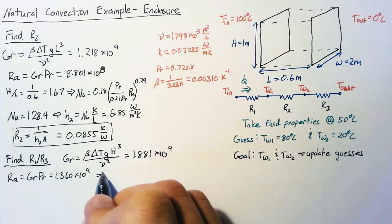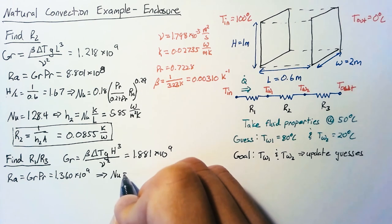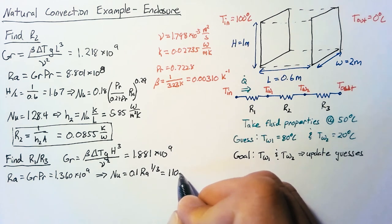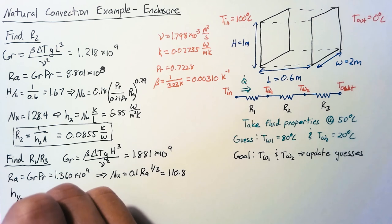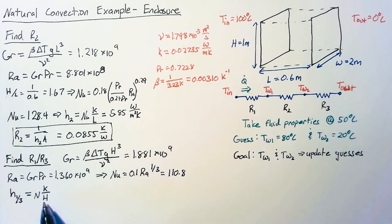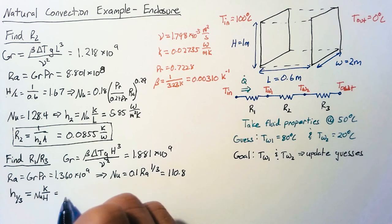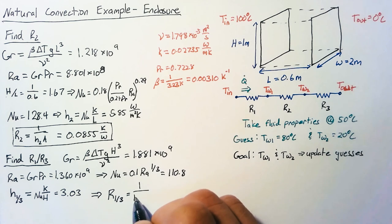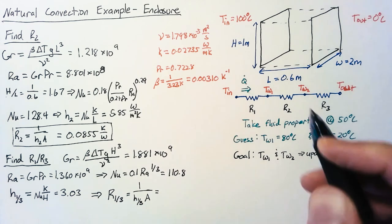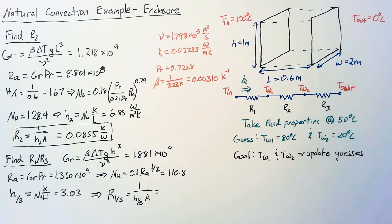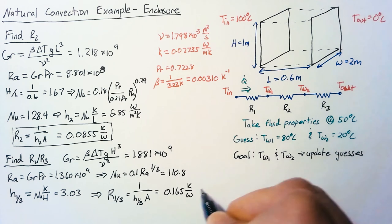And we use our standard vertical wall formula and we're in the range where our Nusselt number is going to be 0.1 times the Rayleigh number to the one-third which is 110.8. So the heat transfer coefficient for both 1 and 3 is thermal conductivity divided by the same characteristic length that we used in the Grashof number. Plugging all that in we end up with the heat transfer coefficient of 3.03. Finally from there we can get the resistance of both 1 and 3 as equal to 1 over that h value we just calculated multiplied by the area. And the area of course is the area that the heat is being transferred through which is that height multiplied by width and that's the same for both of these. That is going to be 0.165 Kelvin per watt.